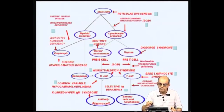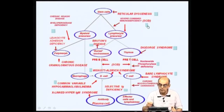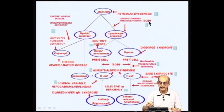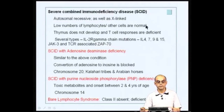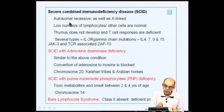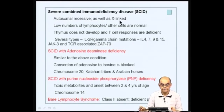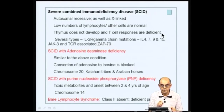Having looked at immunodeficiencies affecting the stem cell, thymus, and bursal environment, you have some very common immunodeficiencies such as severe combined immunodeficiency disease (SCID). SCID is a family or group of immunodeficiencies. They are usually autosomal recessive, some are X-linked, characterized by low numbers of lymphocytes while other cells are normal. The thymus does not develop well and T cell responses are deficient. One type involves absence or mutations in the IL-2 receptor gamma chain.